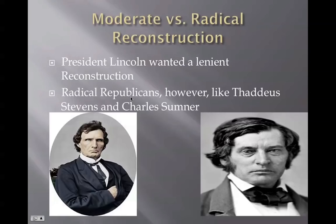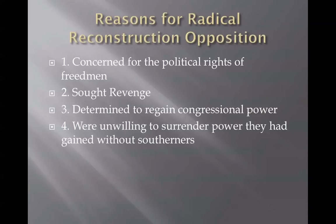The Radical Republicans also sought revenge. Preston Brooks was a representative from South Carolina, and in 1856 he went into the Senate chamber and beat Charles Sumner with his cane. Sumner had insulted Brooks's uncle in a speech — and you don't insult people's uncles. So Charles Sumner was understandably upset and wanted revenge.